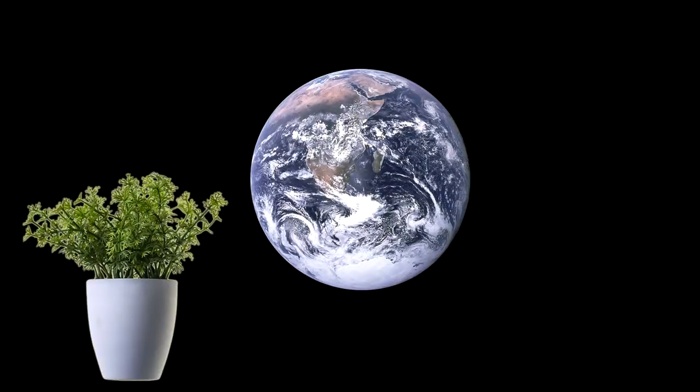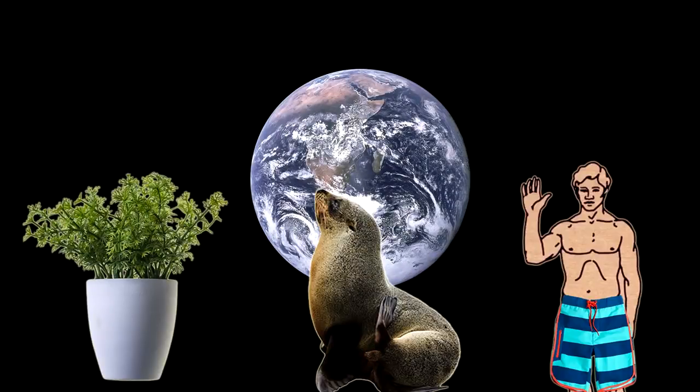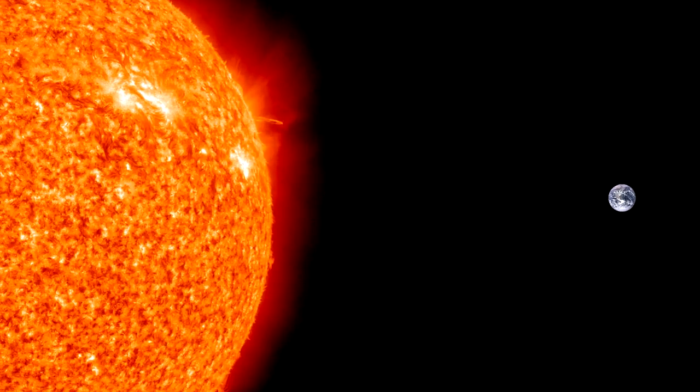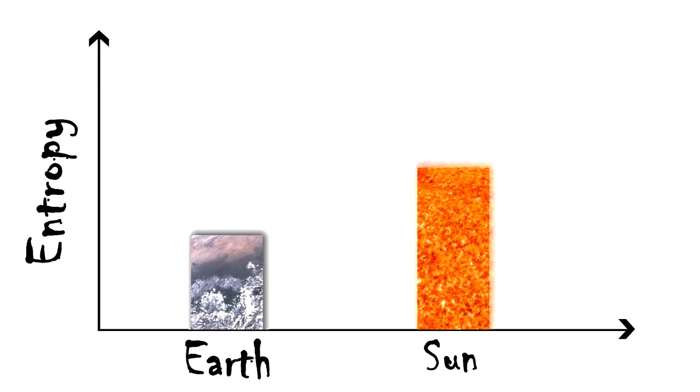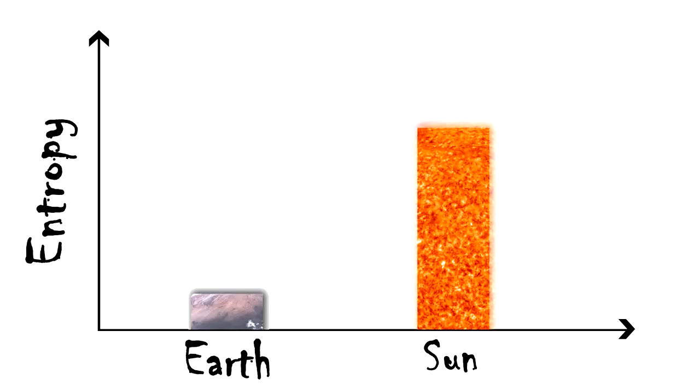Likewise, if you want to make plants and sea lions and talking monkeys on Earth, you'll need millions of years of the sun slowly wearing itself out. Again, increasing the overall entropy of the universe. A lot of disorder for a little order.